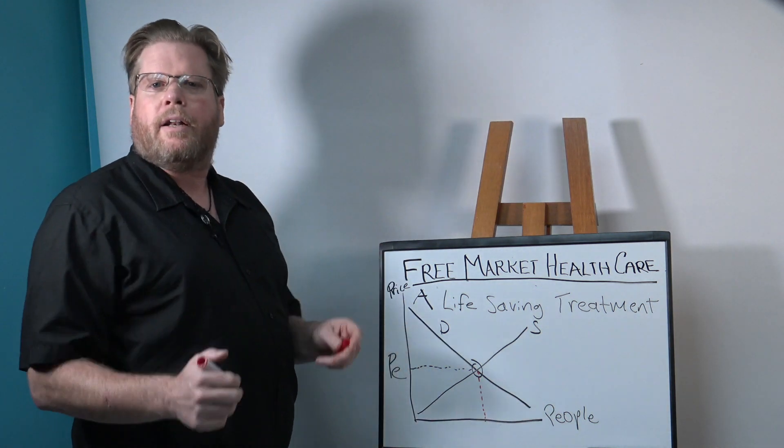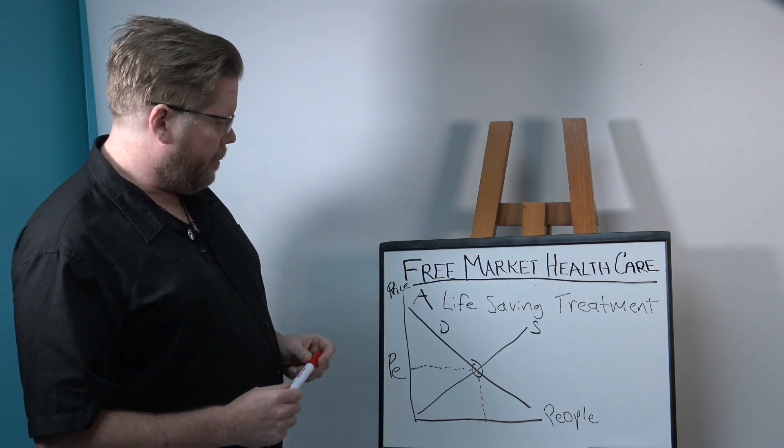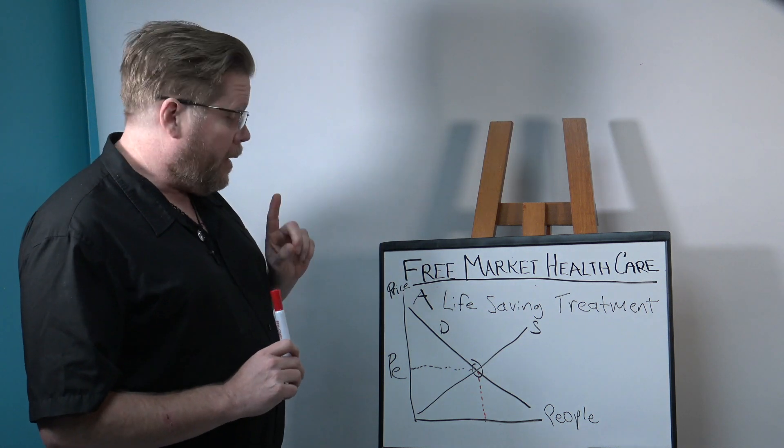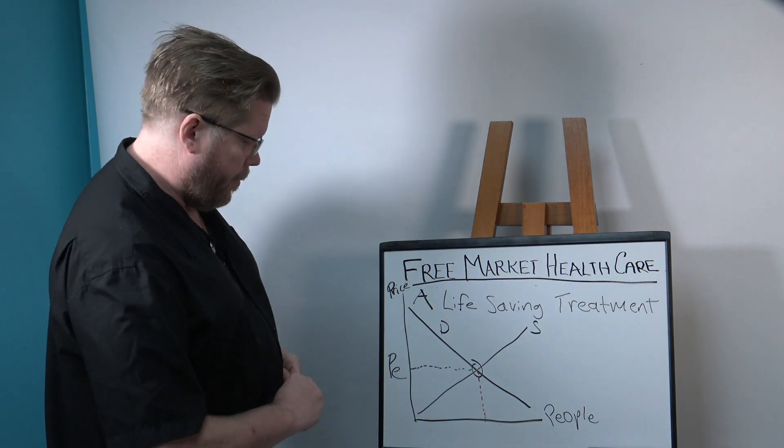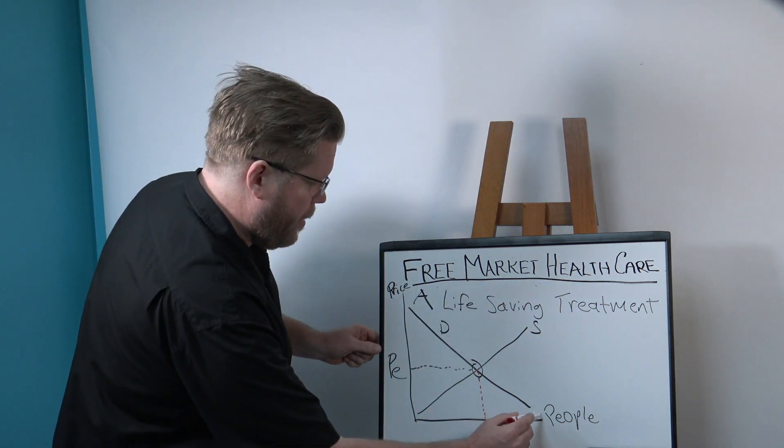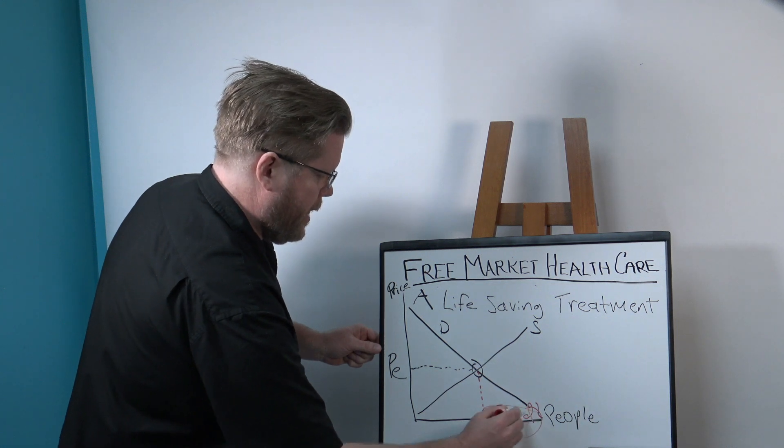Except, let's change one little thing, a little misnomer in microeconomics sometimes. And let's say that this is actually the price that people can afford to pay. So, these people can afford the life-saving treatment and these people are dead. Dead.